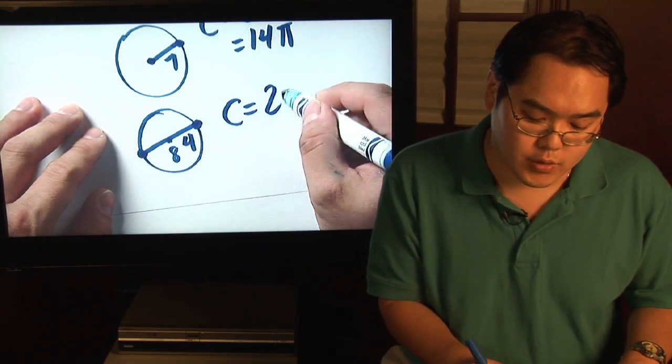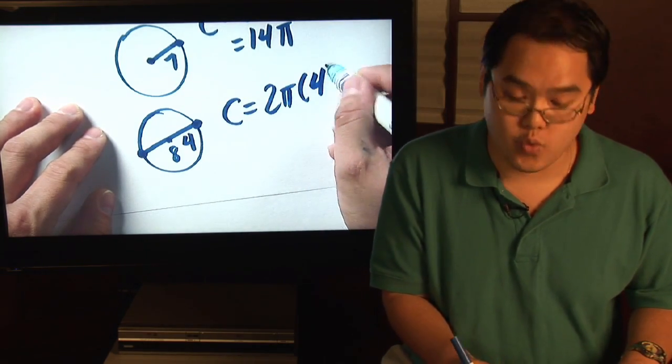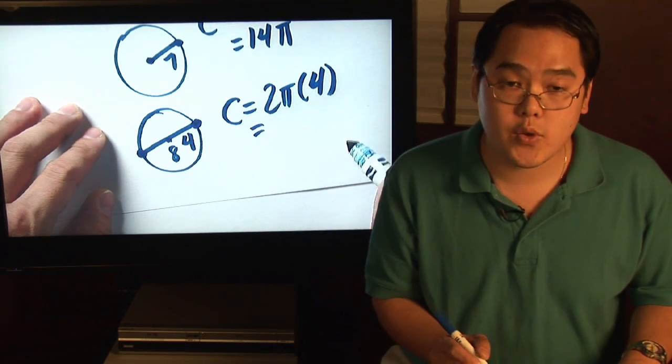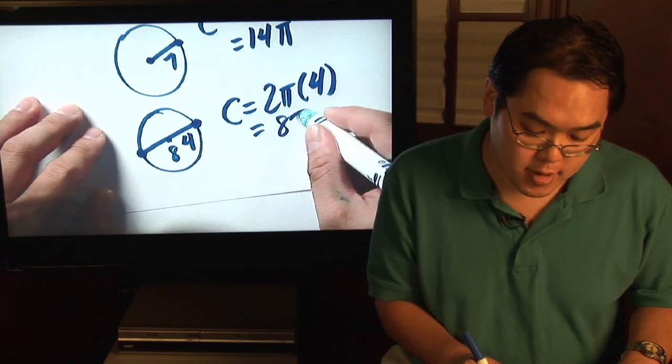So C is equal to 2 pi times your radius is now 4. Just multiply across. 2 times 4 is going to give you 8, so you'll get 8 pi.